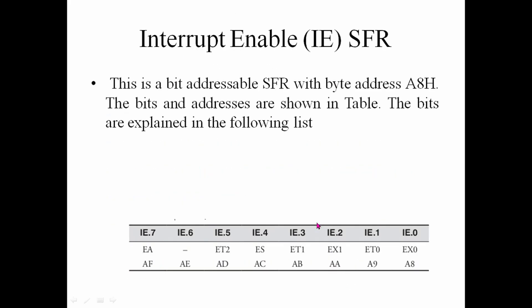The Interrupt Enable special function register is IE. Its bits are: EA (global enable), ET2, ES, ET1, EX1, ET0, and EX0. These bits individually enable or disable each interrupt source.